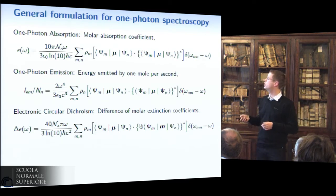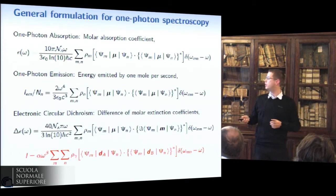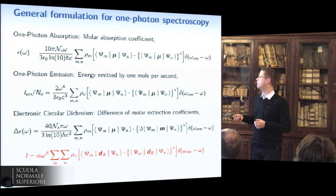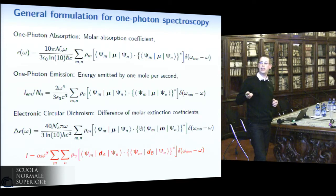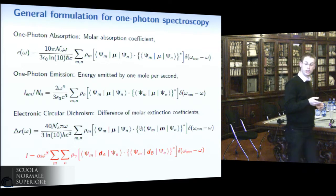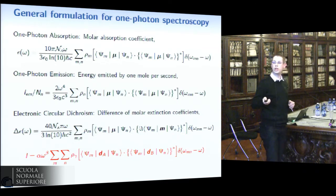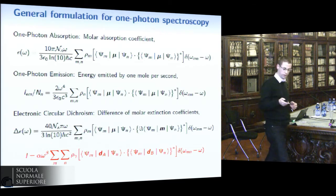From these equations we can find a general pattern with several variables alpha, beta, gamma, and properties dA and dB which are dependent on the spectroscopy. So we only need to implement such a general equation once.